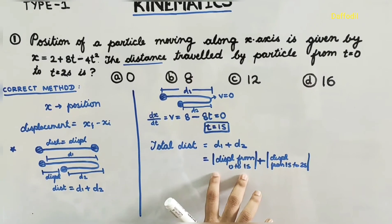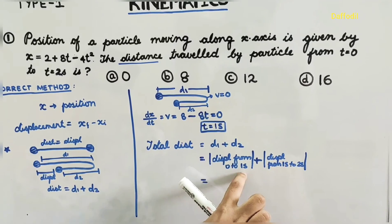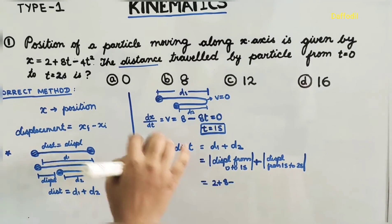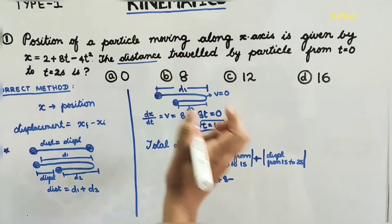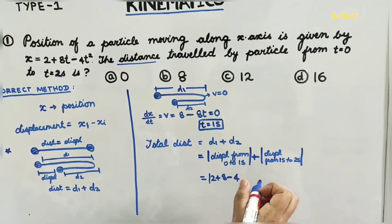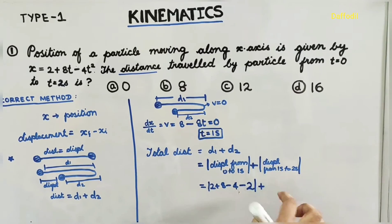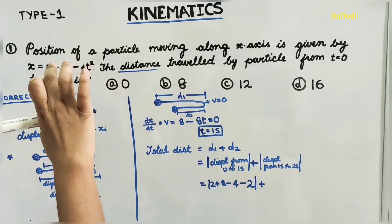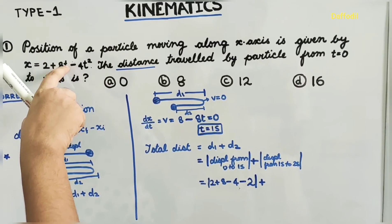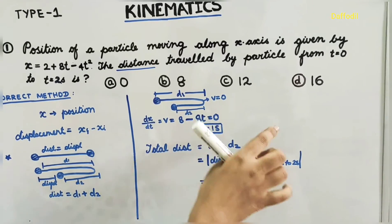For d1: x at t = 1 is 2 + 8(1) − 4(1²) = 2 + 8 − 4 = 6 meters. x_initial at t = 0 is 2 meters. So d1 = 6 − 2 = 4 meters. For d2: x at t = 2 is 2 + 8(2) − 4(4) = 2 + 16 − 16 = 2 meters. x at t = 1 is 6 meters. So d2 = |2 − 6| = 4 meters.